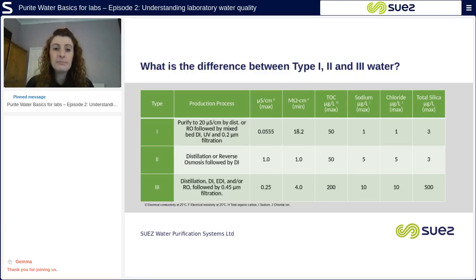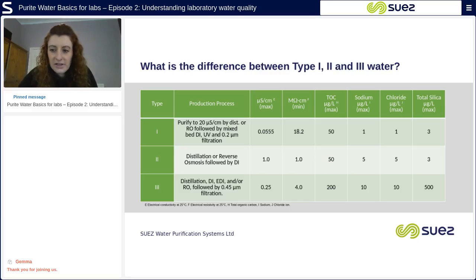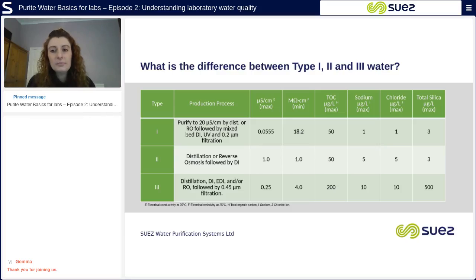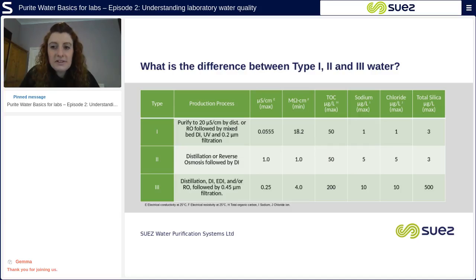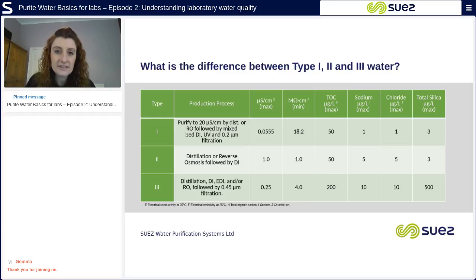18.2 megaohm resistivity is the maximum purity that can be achieved. Type two water is produced by using techniques such as reverse osmosis or distillation followed by deionization, to produce water around one megaohm resistivity, which is the same as one microsiemens conductivity. Type three water is produced by using reverse osmosis or distillation, ion exchange in the form of mixed bed resins or EDI technology, and 0.45 micron membrane filtration, producing water at greater than four megaohms resistivity or 0.25 microsiemens conductivity.